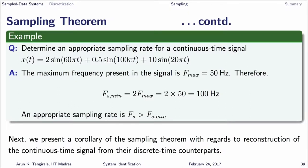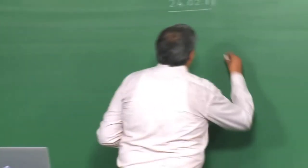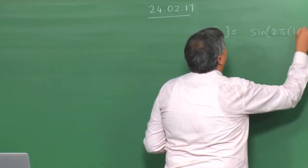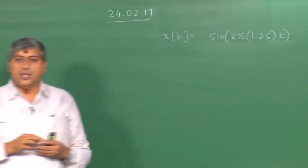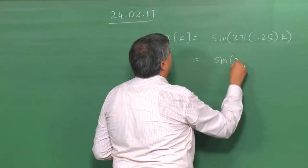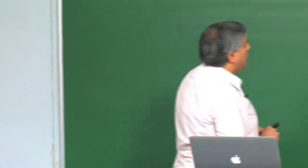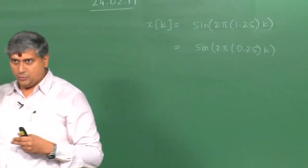Aliasing is essentially the phenomenon where a high frequency discrete time sine wave maps back to a low frequency sine wave. As we went through the example yesterday, a sine wave of frequency 1.25 cycles per sample would be mathematically indistinguishable from frequency 0.25, because of the periodic nature of sine waves and the fact that we are looking at a discrete time signal.